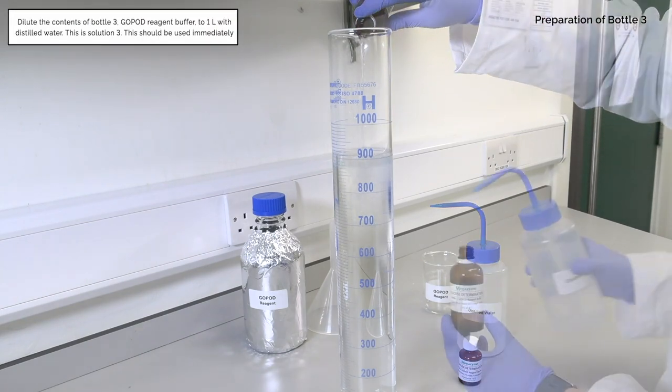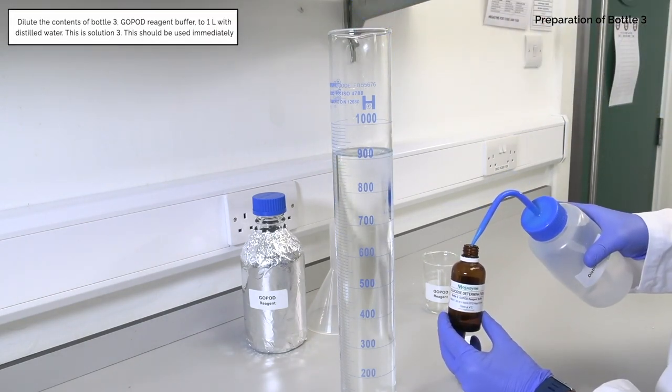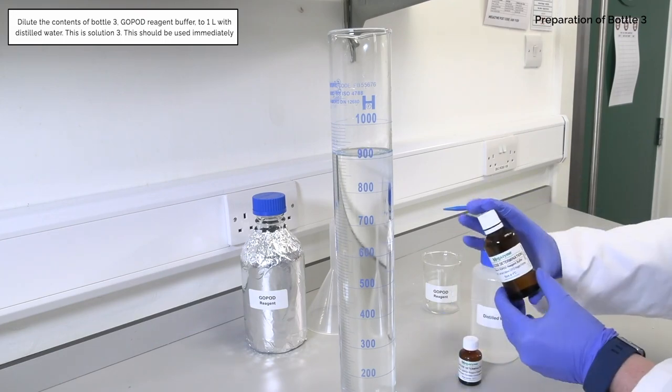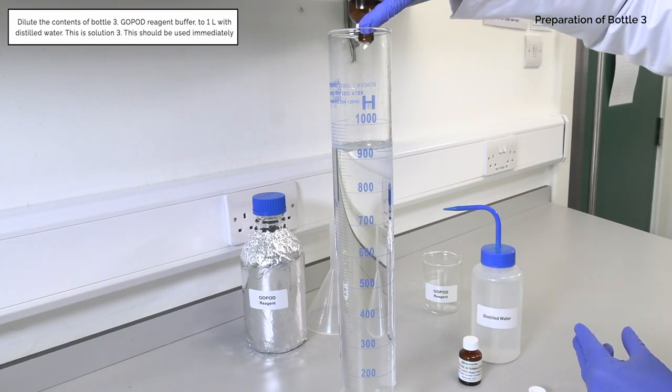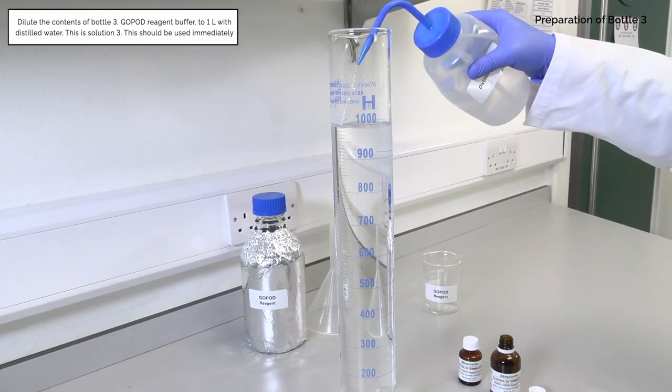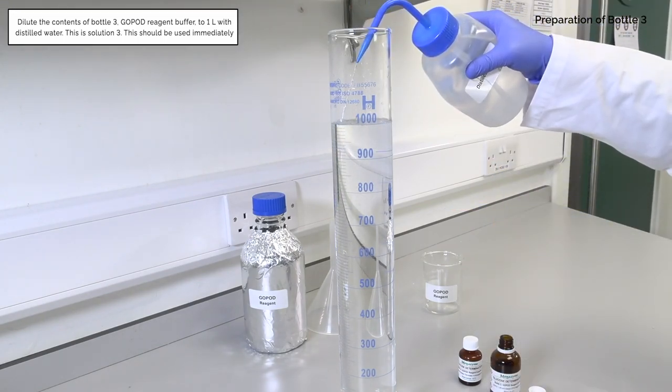Dilute the contents of bottle 3, GOPOD reagent buffer, to 1 liter with distilled water. This is solution 3. This should be used immediately.